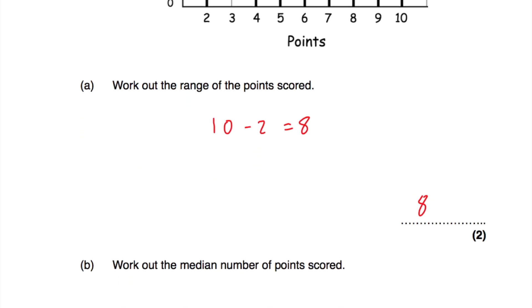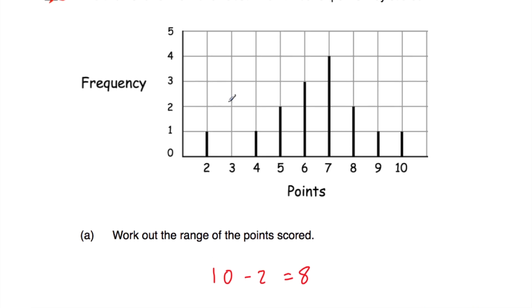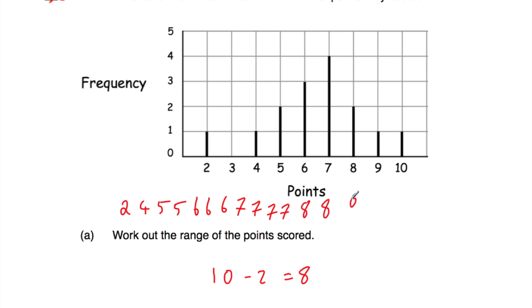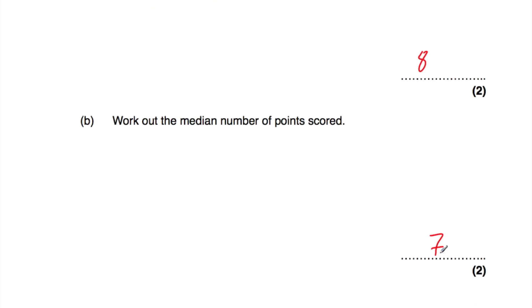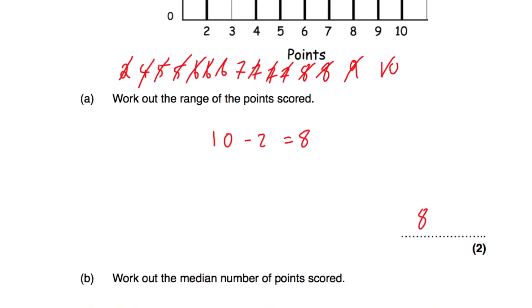Part B: work out the median number of points scored. Listing all values: 2, 4, 5, 5, 6, 6, 6, 7, 7, 7, 7, 8, 8, 9, 10. Crossing off the smallest and biggest alternately from each end, we're left with seven in the middle. So the median number of points scored was seven.